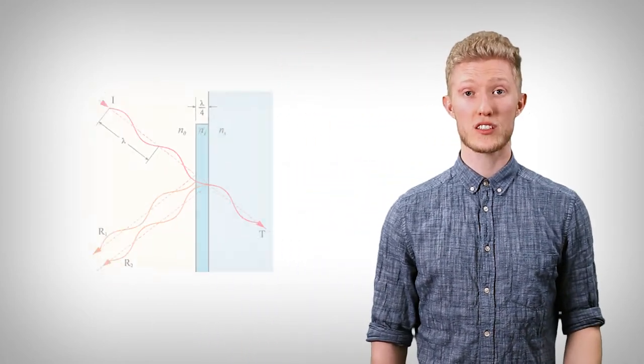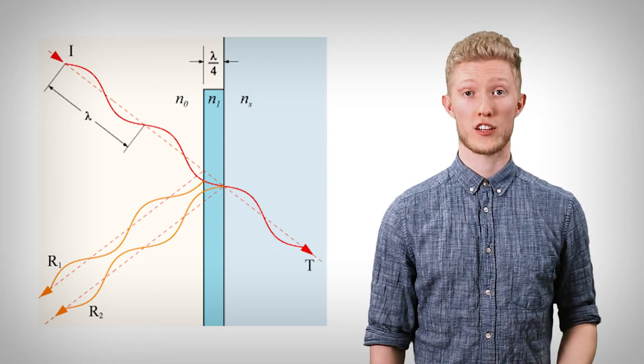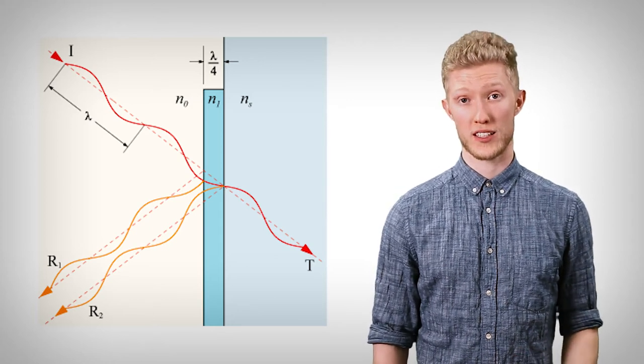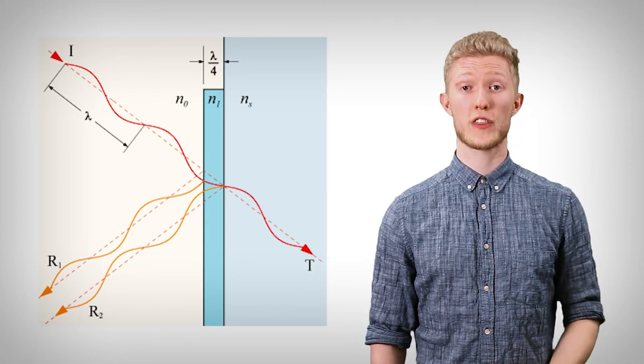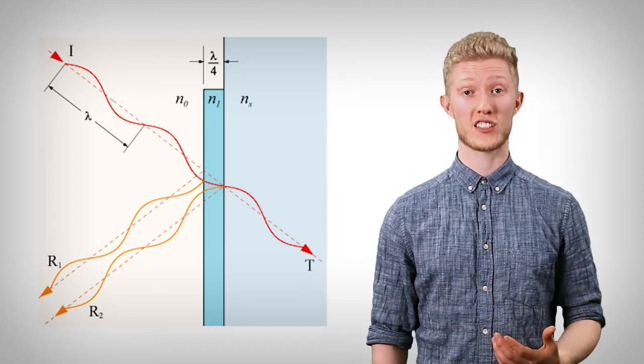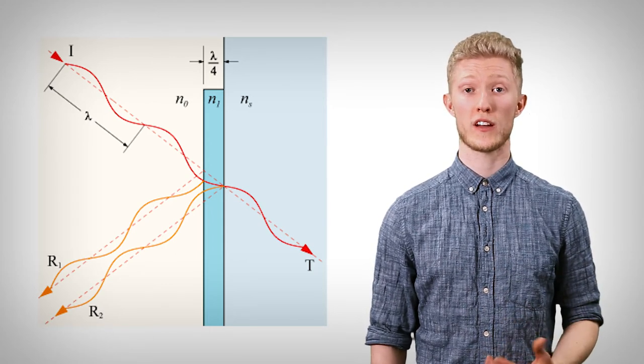The Salisbury screen technique works by splitting the incident wave into two upon hitting the front surface of the dielectric, one transmitted and one reflected. The transmitted wave travels into the material before reflecting off a metallic back surface. If the dielectric's electrical thickness is matched to a quarter of the wavelength of the incident wave, then the transmitted wave emerges perfectly out of phase with the reflected wave and the two destructively interfere and cancel.